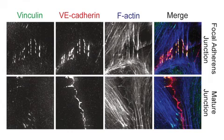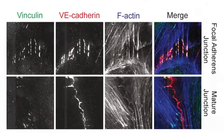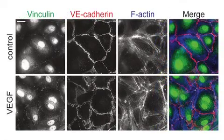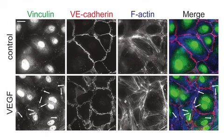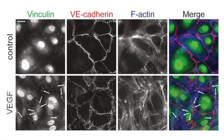Hüveniers et al. then looked to see what happened to focal adherence junctions in the presence of hormones that promote adhesion remodelling. With VEGF, you induce junction remodelling, so you see an increase in the number of these focal adherence junctions and an increase in the number of vinculin-containing structures. It's not very fast, but within an hour or a couple of hours, you can see that building.